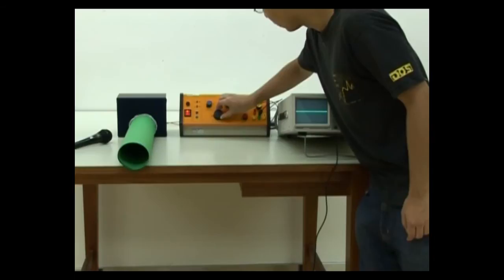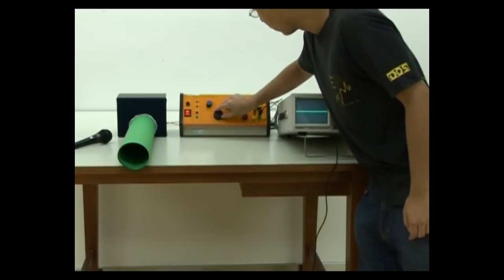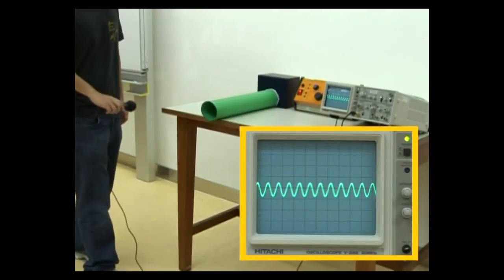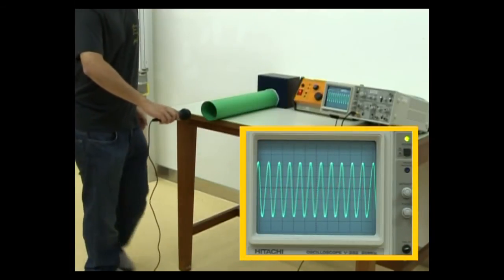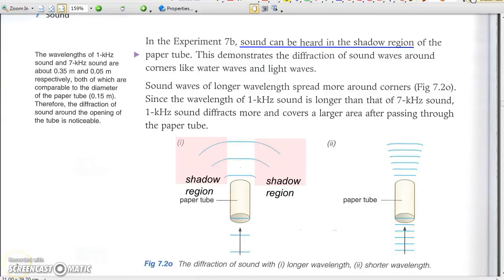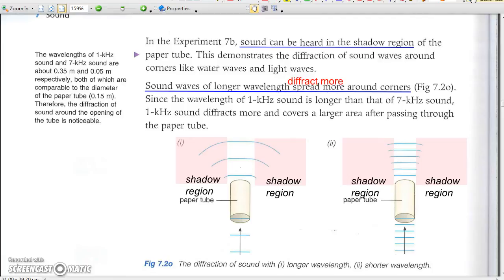Now repeat the steps with the signal generator set at 7 kHz. How does the area of loud sound change when the frequency of sound is increased? The diffraction of sound decreases with frequency. In other words, sound diffracts less when frequency increases. High-frequency sound is more directional — it deflects less and is heard almost only right in front of the loudspeaker.